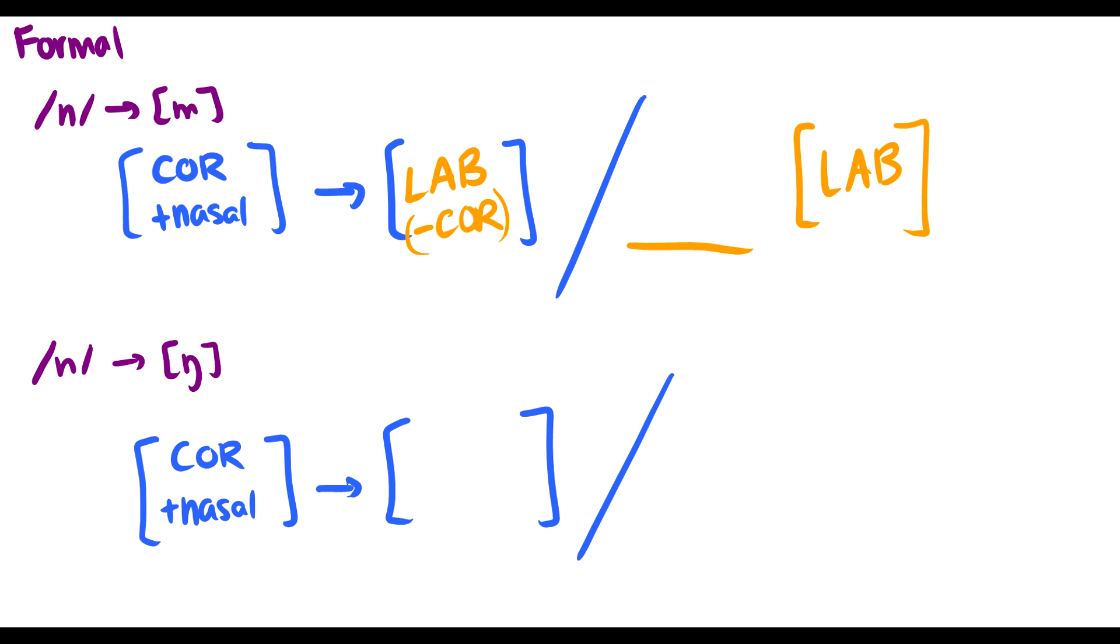So before labial, this N will become an M. What about N to the ŋ? Well, again, it just becomes dorsal and it loses its coronal. And this happens before dorsal sounds. Now, if we want to be more specific, we could say, okay, it's before dorsal consonants. And in fact, we should say it's before consonants because vowels are dorsal and it doesn't happen before all vowels. So specifying consonant is probably good. So these are the two rules.